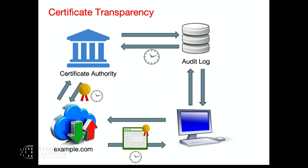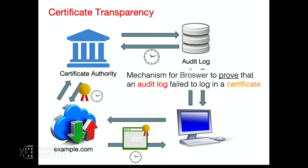The problem is that when my browser recognizes a website has an issue, I need to report it. But by definition, if I have to report it, I have to reveal the website I was browsing—and there are obvious reasons I want to keep that private. For example, if you're in a company viewing some internal subdomain, you don't want to reveal it. So we want a mechanism for the browser to show that a certificate issued by some certificate authority is not in the public audit log, without revealing the website being accessed.